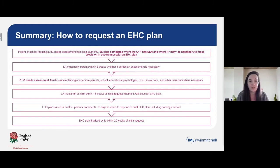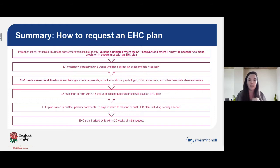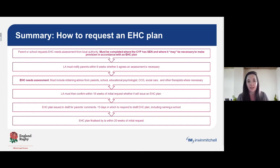Parents can make the request of their own accord. The local authority, once receiving that request, should notify parents within six weeks of their decision as to whether they're going to carry out an assessment. The actual assessment should include specific advice from professionals across education, health and social care. The assessment should be completed within 10 weeks — so by week 16, six weeks for the decision and 10 weeks for the assessment, the local authority must confirm whether it will be issuing an EHC plan. The plan is first issued in draft to parents for their input across all sections, and parents can at that point request a school to be named.